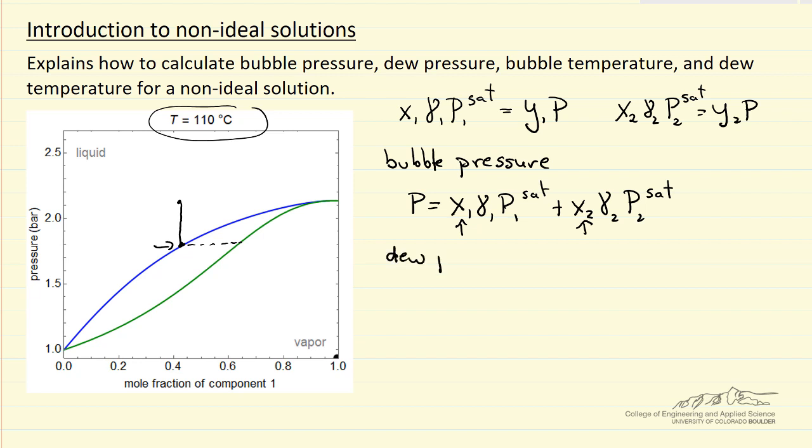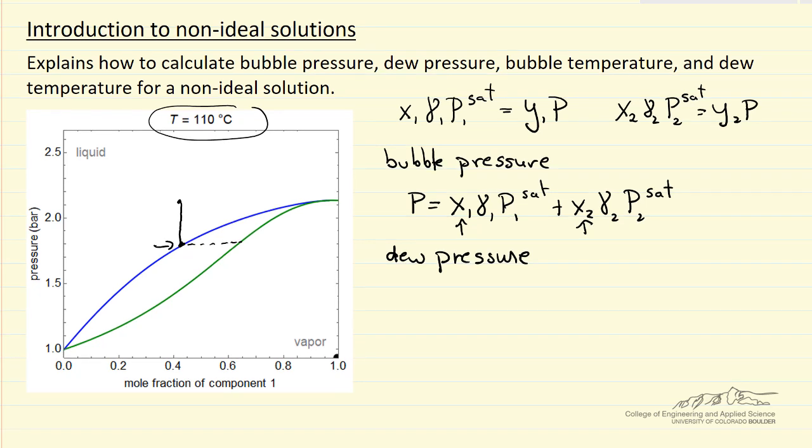Let's look at the same thing for the dew pressure, which is the green line. The idea here is we have a vapor, and if we start increasing the pressure, at some point we get that first drop of liquid, that's dew. For the dew pressure, we don't know x1 and x2, we know y1 and y2. x1 plus x2 equals 1, however.